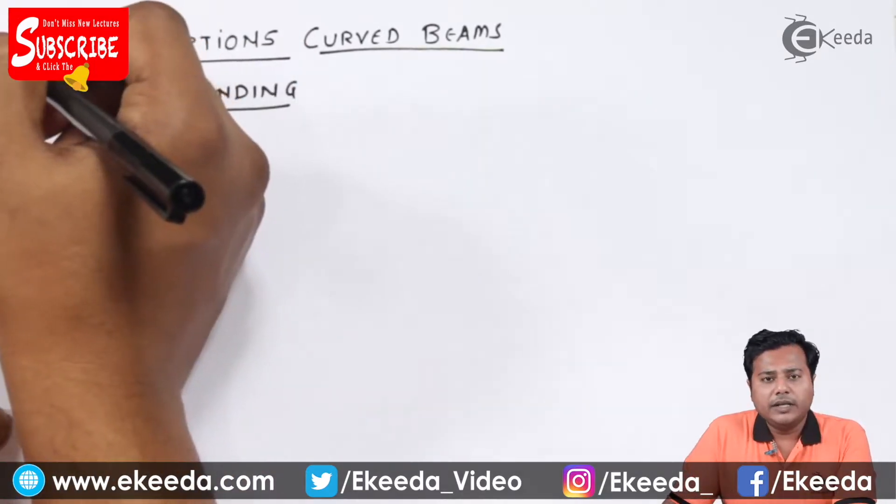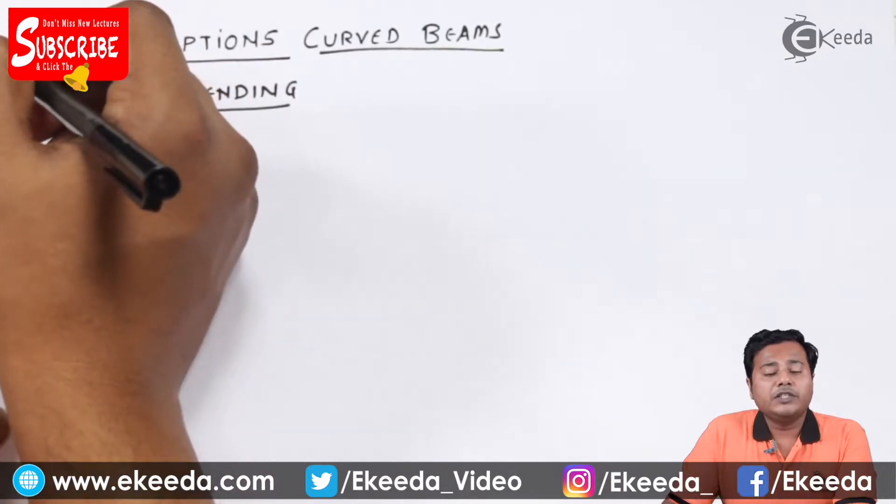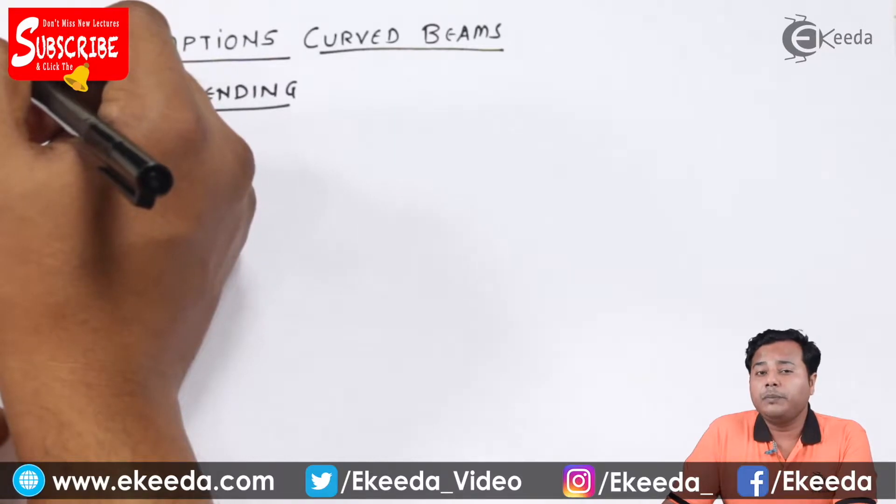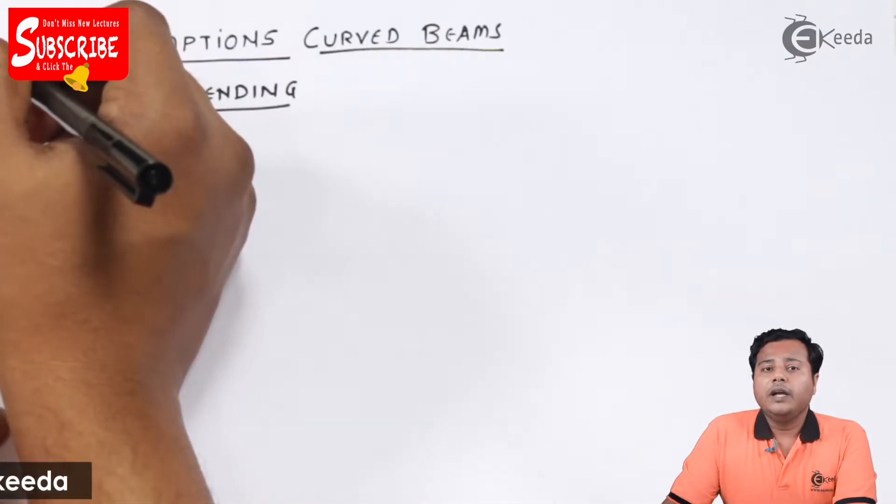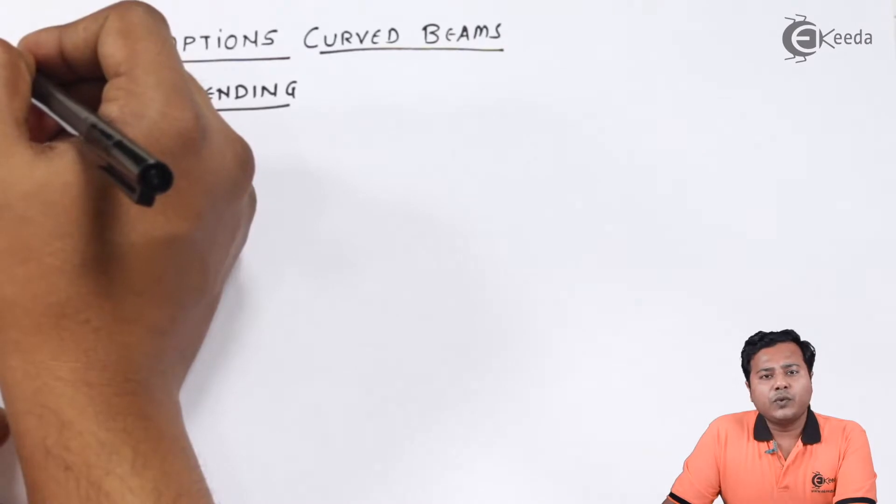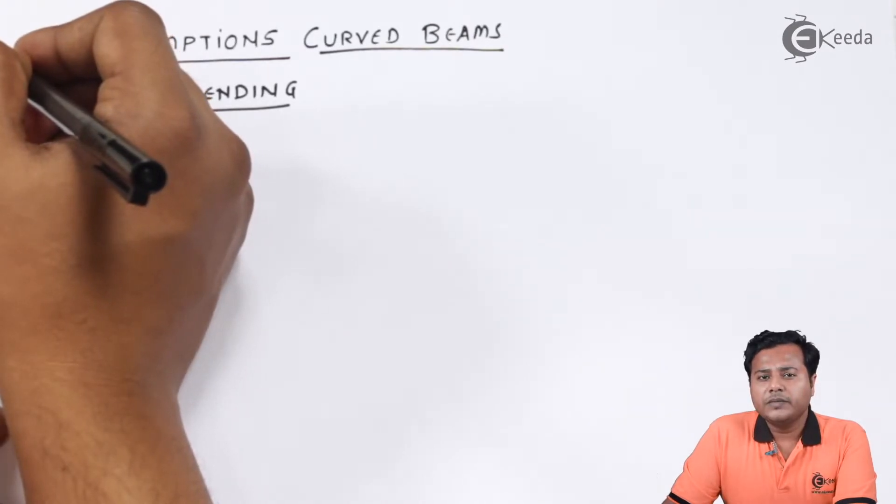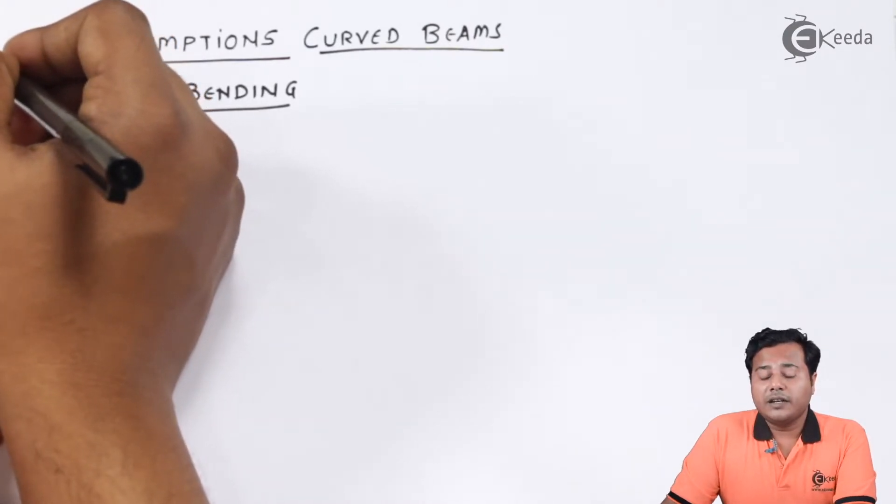In short, the curved beam is assumed to be under the impression of only pure bending. There is no torsion, there is no axial force acting directly on the beam. Why these considerations are important?